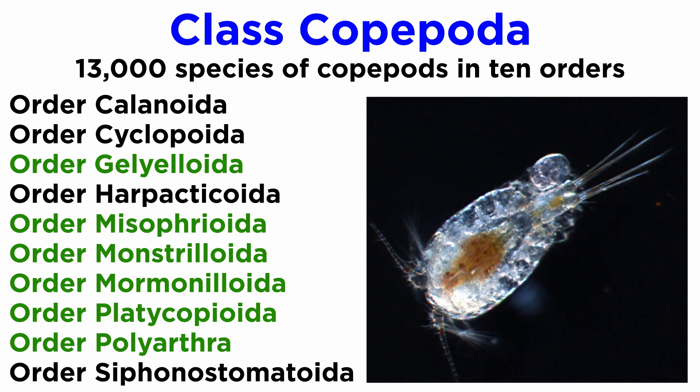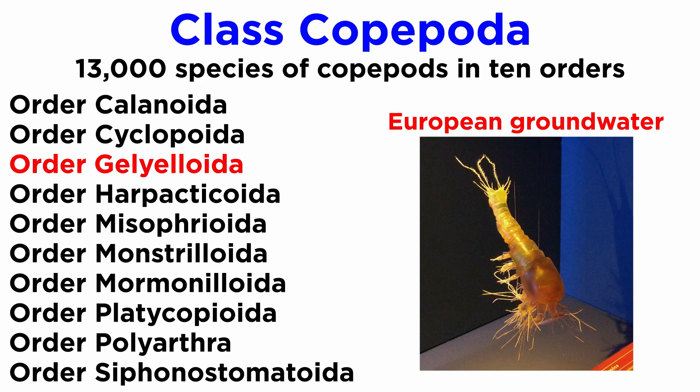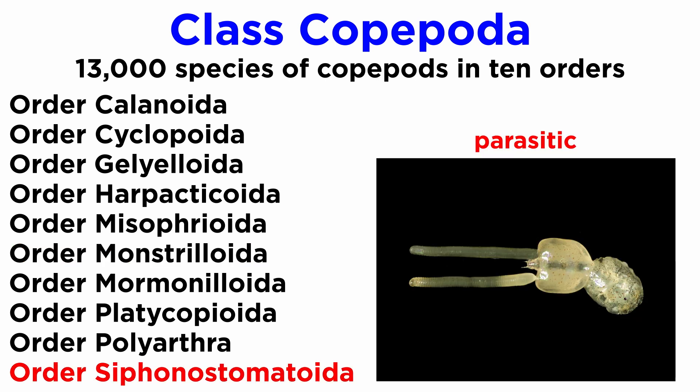Orders Gelyelloida, Misophrioida, Monstriloida, Mormonilloida, Platycopioida, and Polyarthra are all considered more cryptic. Some, like Mormonilloida, only have five species. Others, like Gelyelloida, are found only in European groundwater. Still others, like Monstriloida, are found in oceans around the world but lack oral appendages. Finally, Siphonostomatoida includes a great many parasitic copepods, many of which feed on fish and marine worms, and they are noted for their truly bizarre adult forms.